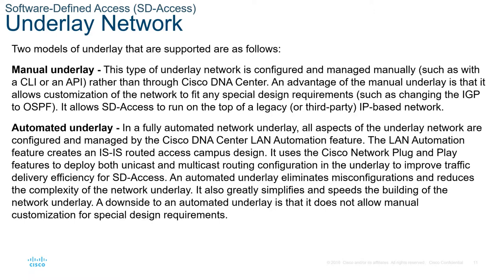Some organizations do not want to go to a fully automated overlay because the operations of the company rely on the existing network. For the automated underlay, all aspects of the underlay network are configured and managed by the Cisco DNA Center LAN automation feature. The LAN automation feature creates an IS-IS-routed access campus design. IS-IS-routed access is making a huge comeback and is the recommended IGP protocol for the automated underlay.